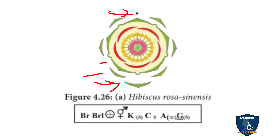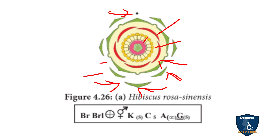Looking at the floral diagram of Hibiscus, the outer whorl is the bract, then bracteoles, then the calyx showing fusion, and inside that the corolla in twisted aestivation with free petals. Inside are the stamens forming one single bundle, and at the centre are five carpels — pentacarpellary.